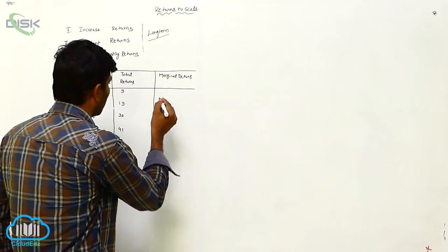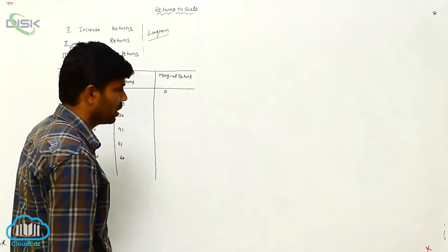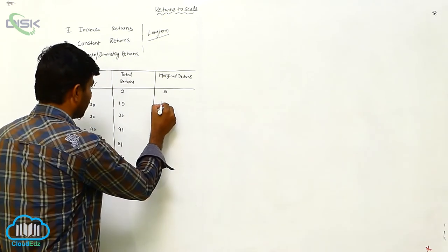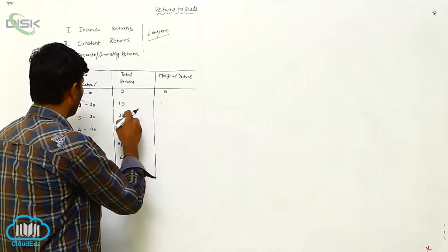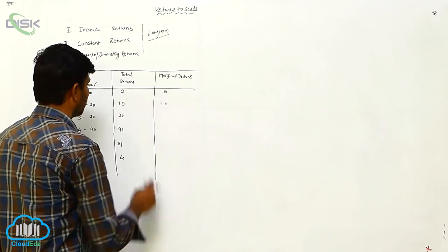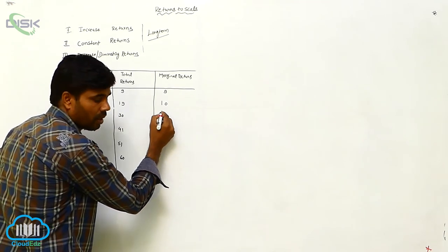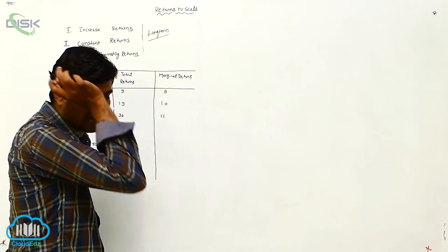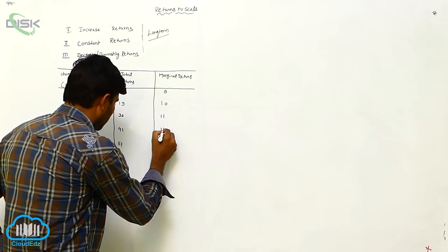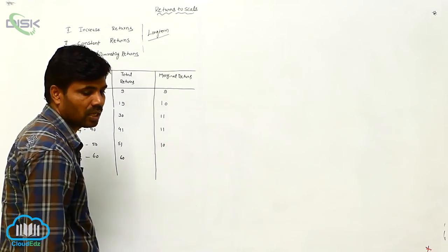Here it is. This is the 9. Marginal unit. Next is 19. What's that? 19. Sorry, 10. Next is 11. Next is 11. Next is 11. Next is 10. Next is 9.